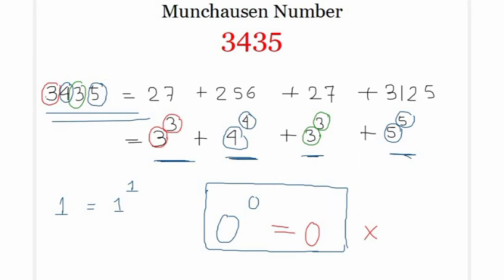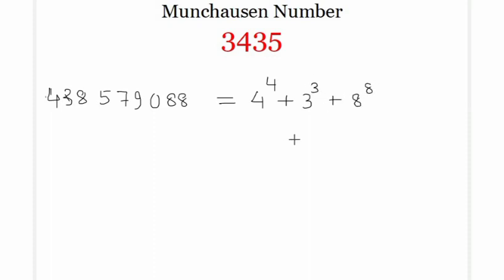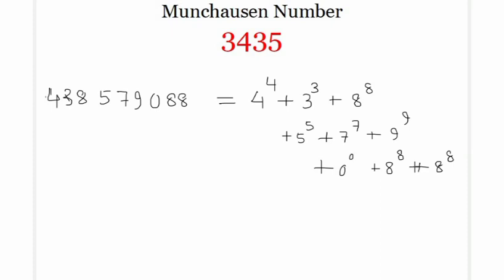One such number, under the convention that 0⁰ = 0, would include digits with zeros. Another example is the number formed by 3⁸ + 8⁸ + 5⁵ + 7⁷ + 9⁹ + 0⁰ + 8⁸ + 8⁸. This is about the Munchausen number, but 3435 has many different representations as well.